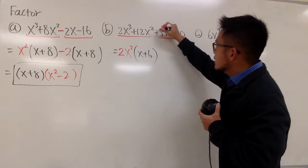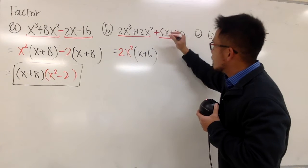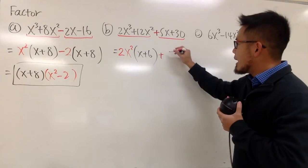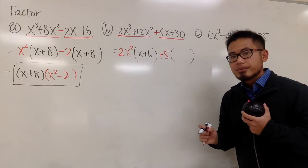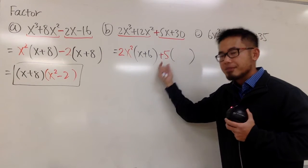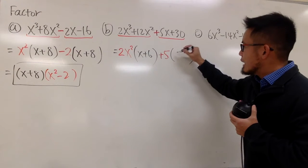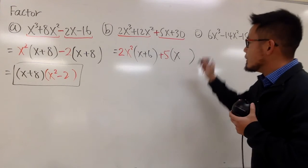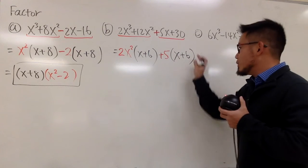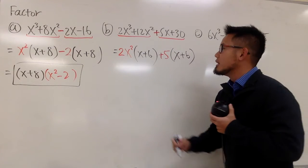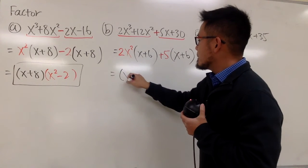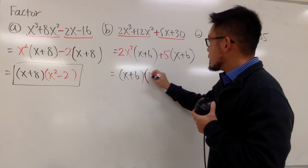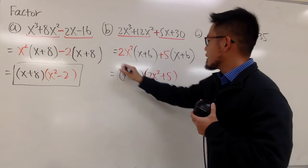For the second part, we bring down the plus sign right away. Looking at 5x and 30, I can factor out positive 5. Positive 5x divided by 5 gives x, and positive 30 divided by 5 gives plus 6. We didn't have to change the sign because we factored out a positive. Both groups have x plus 6 in common, so we factor that out. The second parentheses gives us 2x squared plus 5, and we are done.